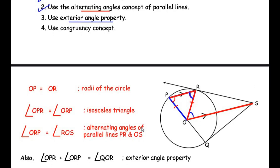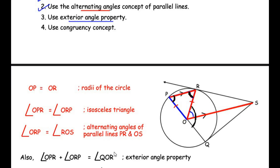Now let us use the exterior angle property. Angle OPR plus angle ORP equals angle QOR, because angle QOR acts as an exterior angle to triangle POR. According to the exterior angle property, the exterior angle equals the sum of the two opposite interior angles of the triangle — so angle QOR equals angle OPR plus angle ORP.